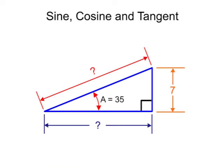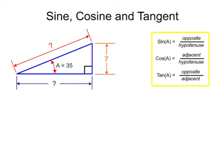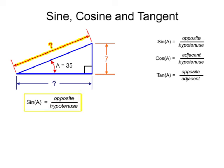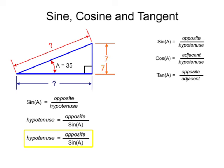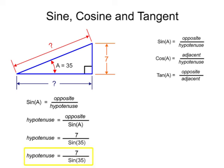If any one variable in the equation is unknown, we can use the sine, cosine, and tangent equations to solve for the missing value. For example, if we know that angle A is 35 degrees and the opposite side is 7, we can solve for the hypotenuse using the sine equation. First, rearrange the equation to solve for the hypotenuse. Then, using a calculator, enter 35 degrees into the sine function. Substitute the value into the equation and calculate the results. Similarly, we could solve for the adjacent side using the tangent equation.